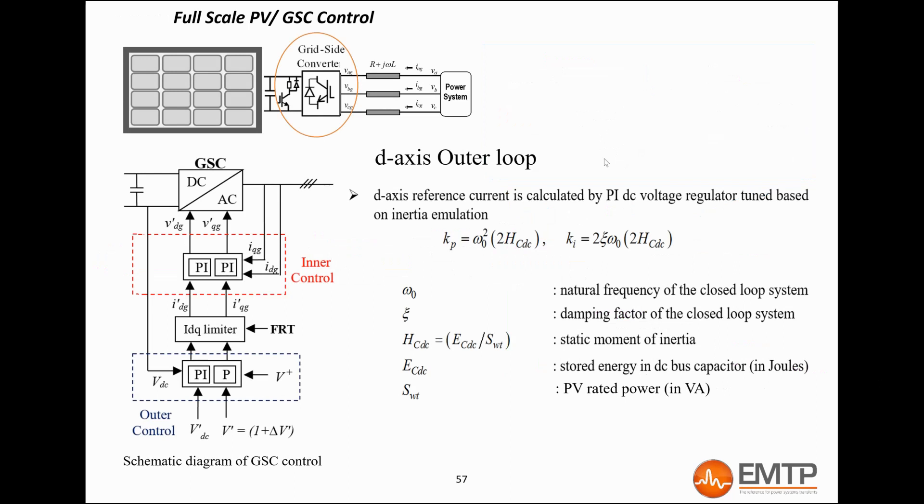On the grid side, the DQ-transformation angle follows the voltage here, right after the choke RL filter at the converter transformer terminal. The D component corresponds to the real power and the Q component corresponds to the reactive power.